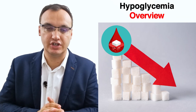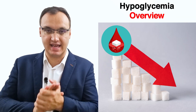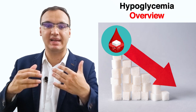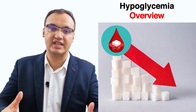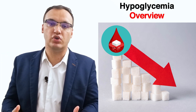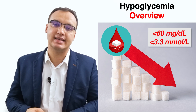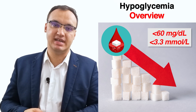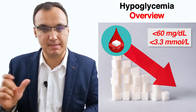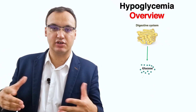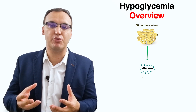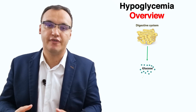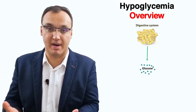Let's start with a definition. Hypoglycemia is the state of having a blood glucose level that is too low to effectively fuel the body's cells — specifically less than 60 mg per deciliter or 3.3 millimole per liter. Glucose, which comes from carbohydrates found in foods, is the primary fuel source for the brain and also for the body.